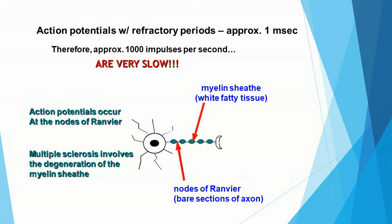We have one more thing to talk about regarding the neuron, and that is another important vocabulary term: the myelin sheath.